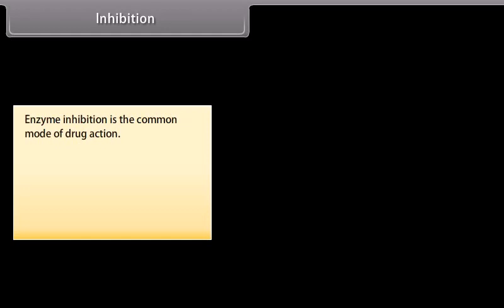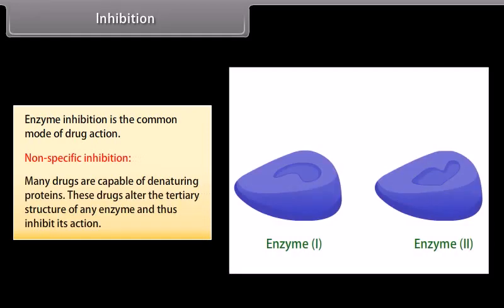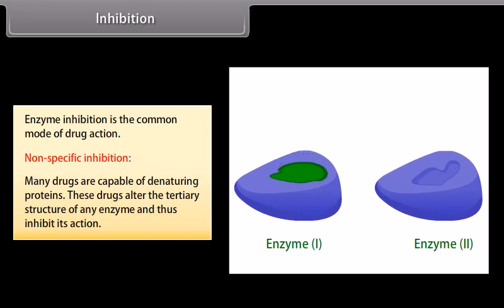Inhibition: Enzyme inhibition is the common mode of drug action. Non-specific inhibition: many drugs are capable of denaturing proteins. These drugs alter the tertiary structure of an enzyme and thus inhibit its action. For example, heavy metal salts, alcohol, formaldehyde and phenol inhibit enzymes non-specifically.